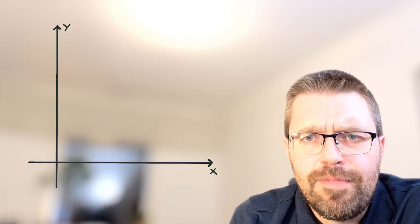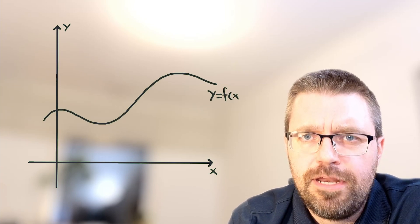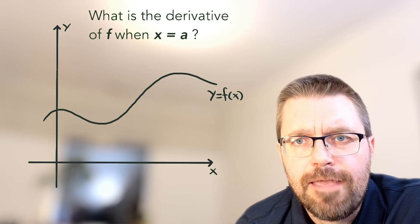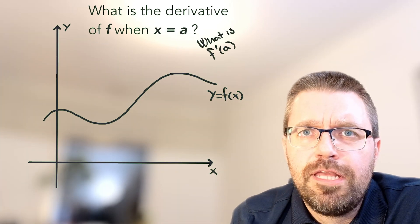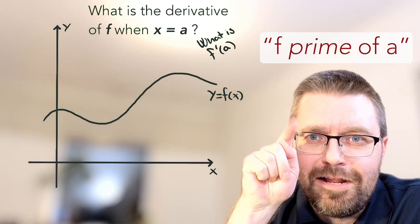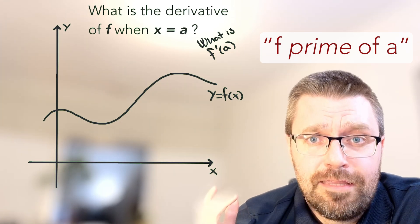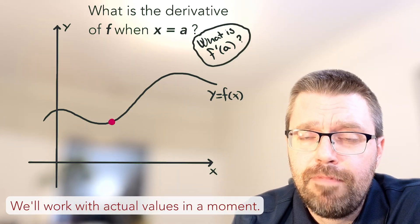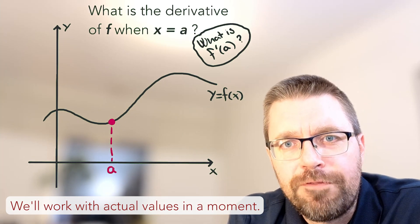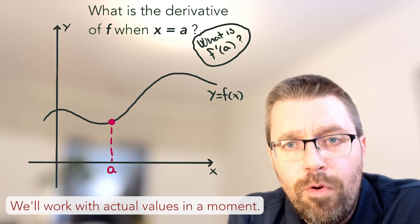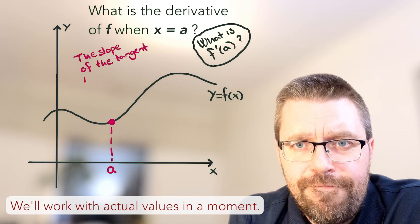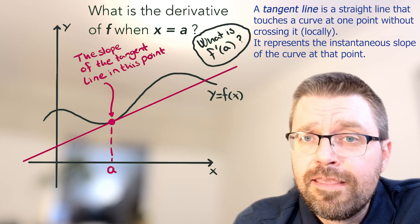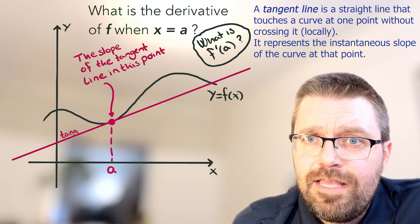If we have a coordinate system and draw some graph of a function we can call f of x, then the question is: what is the derivative of f when x equals a? It is more common to write it as: what is f prime of a? That little mark over the f is called prime and it stands for derivative. We place a point on the graph with the x value a. The derivative is the slope of a tangent line to the graph at that point. A tangent line is a straight line that just touches the point and has exactly the same slope as the graph at that point.